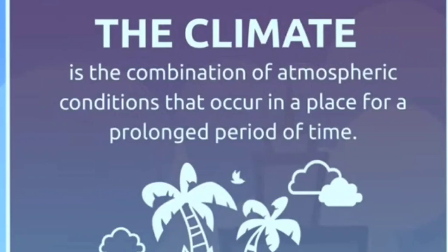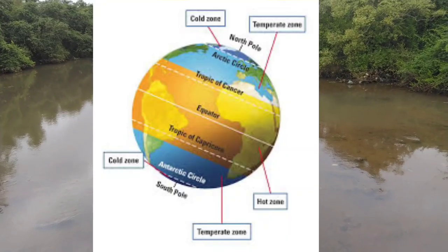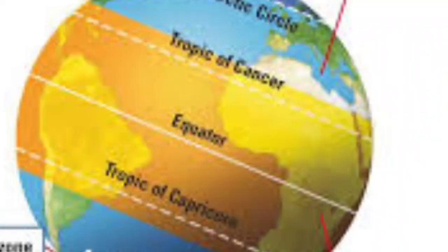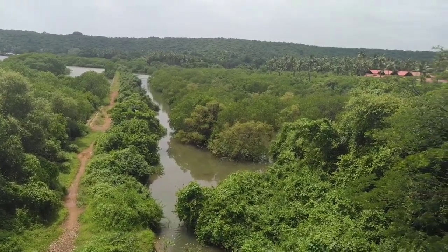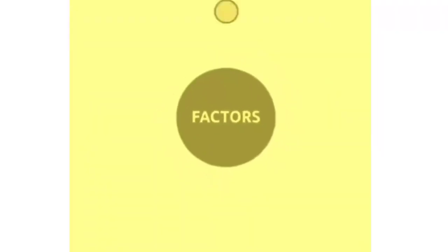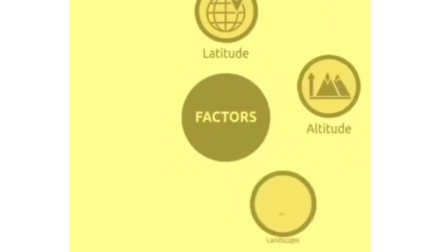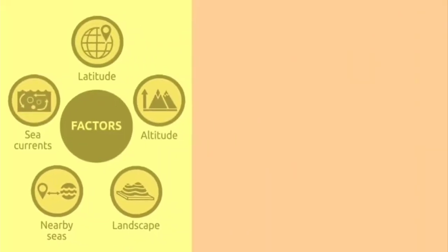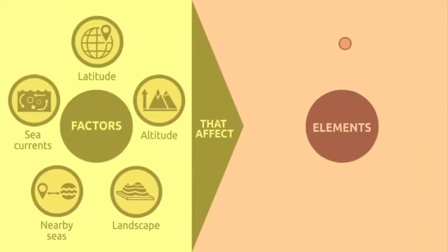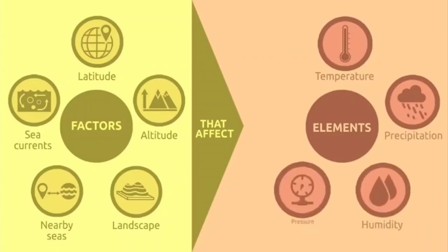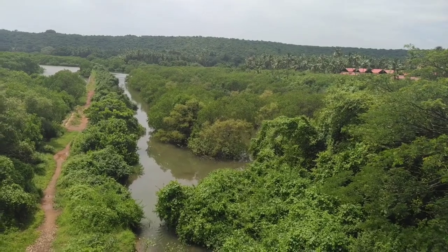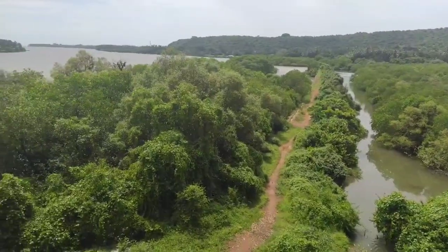In contrast, climate is the combination of atmospheric conditions that occur in a place over a longer period of time. For example, hot and humid places that receive heavy rainfall are called tropical climate. Factors that affect climate are latitude, altitude, longitude, nearby sea, and sea currents. These affect elements like temperature, precipitation, humidity, pressure, and winds.